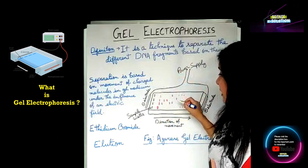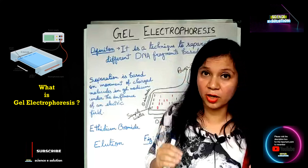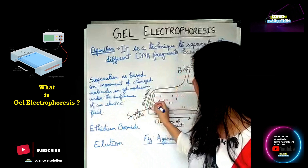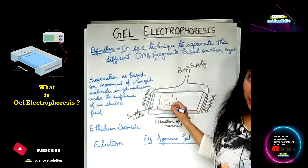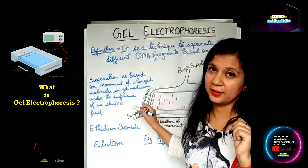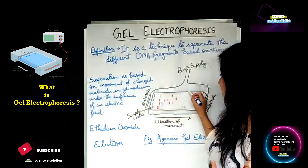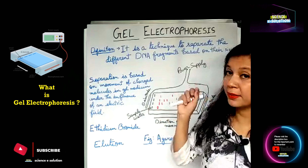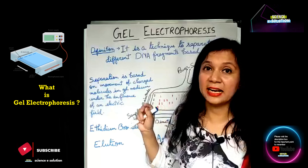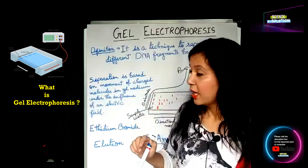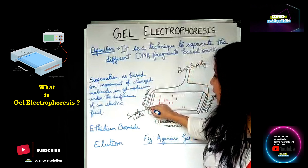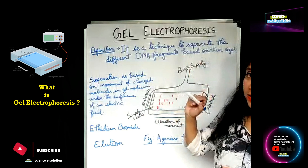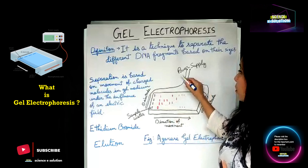The gel has a sieving effect for the DNA molecules — the small DNA fragment will move farther through the gel, and the bigger fragment will lag behind. We also add a little buffer so that it can conduct electricity. Then we connect one side to a negative electrode and one side to a positive electrode, connecting the tray to a power supply.